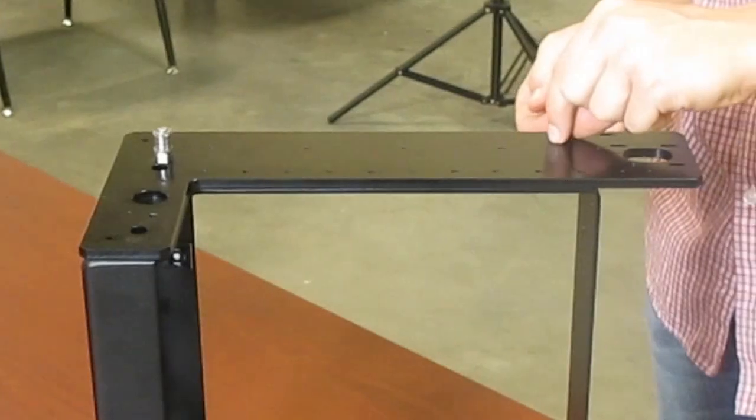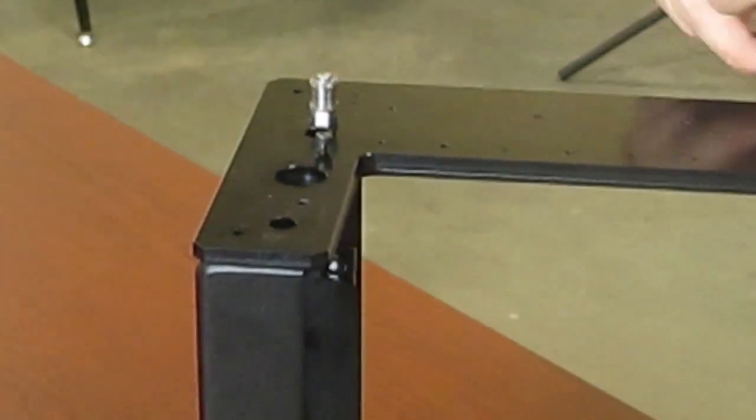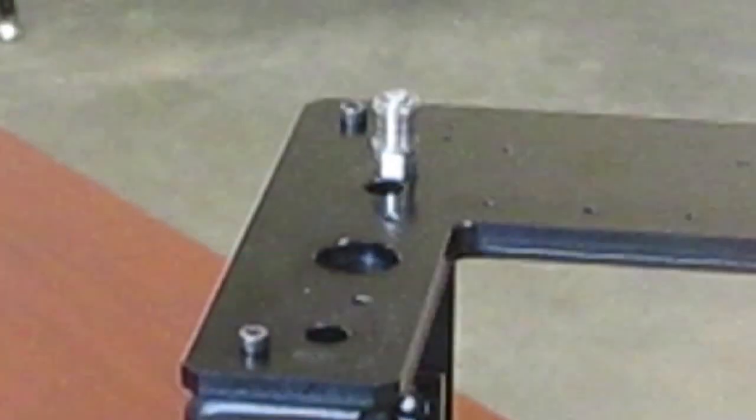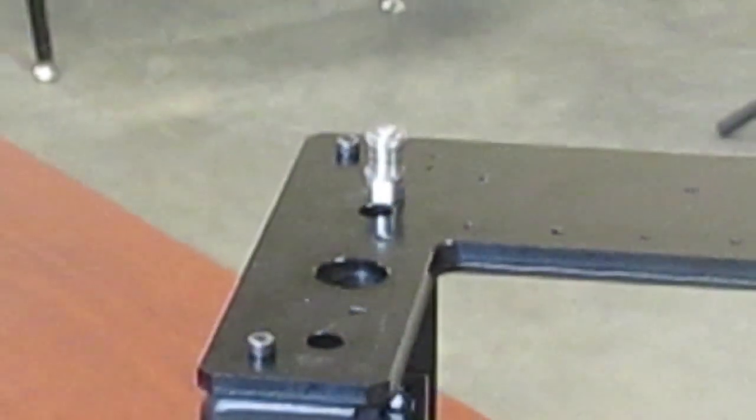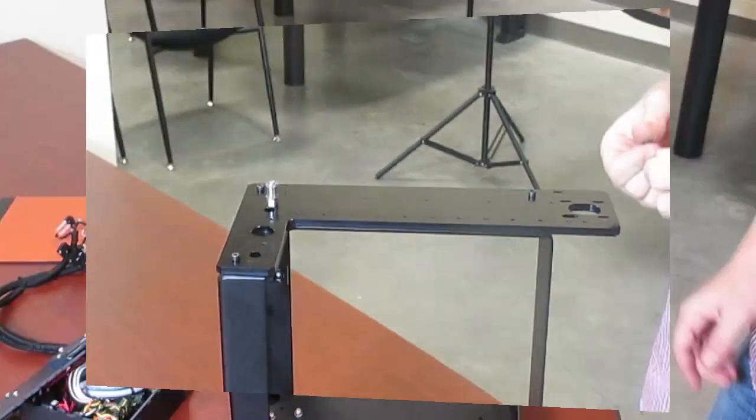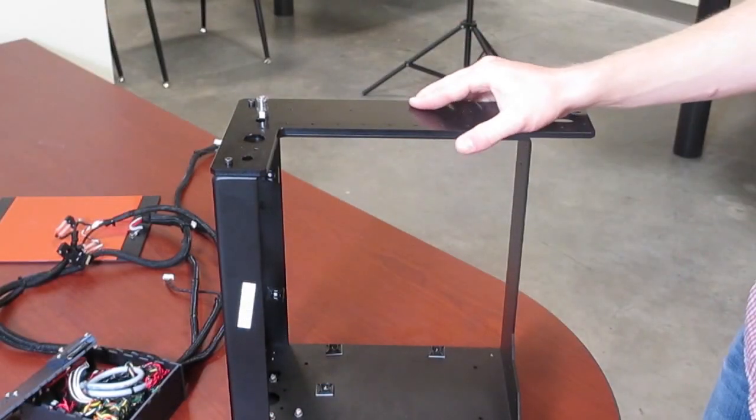The bolts will go here, here, and there. I'll tighten them up and I'll be right back. We've got the top plate all mounted. Next we're going to mount the electronics box.